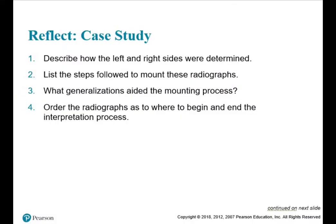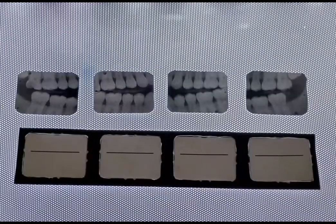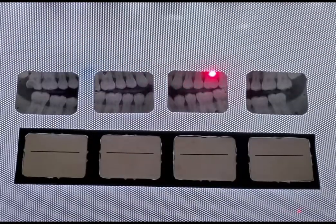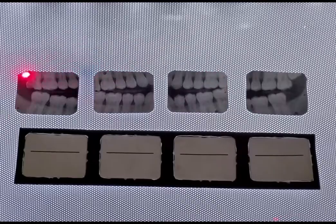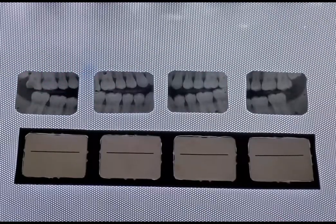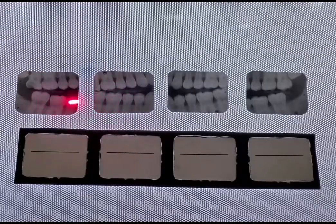So the third question for our case study is what generalizations aided the mounting process. Maxillary molars have three roots. Palatal roots make it difficult to visualize three so it'll look all together. Molars should be placed more distally and premolars are mesial.